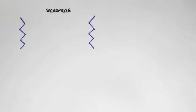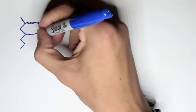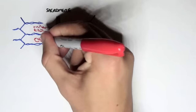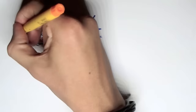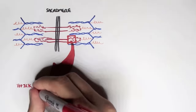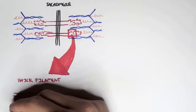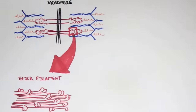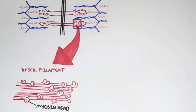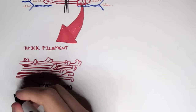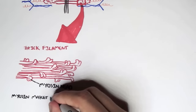Recapping what our sarcomere looks like: it contains the thin filaments and the thick filaments — thin filaments in blue and thick filaments in red. Looking at a portion of this thick filament, it contains many myosin heads, usually in doubles. The protein myosin makes up the thick filaments.